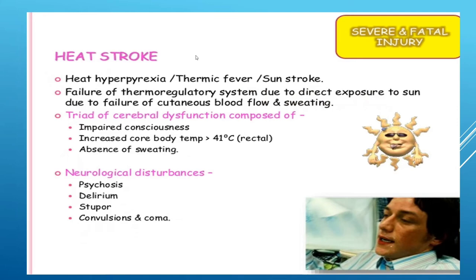Heat stroke involves failure of the thermoregulatory system due to direct sun exposure, failure of cutaneous blood flow, and cessation of sweating. It presents as a triad: impaired consciousness, increased core body temperature above 41 degrees centigrade by rectum, and absence of sweating. Neurological disturbances include psychosis, delirium, stupor, convulsions, and coma — this is the extreme stage of heat exposure.